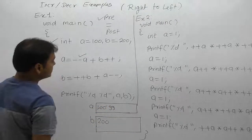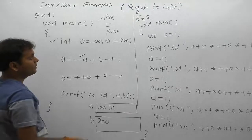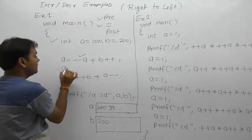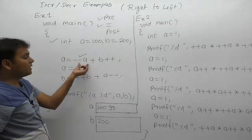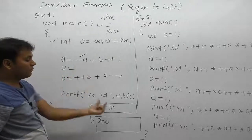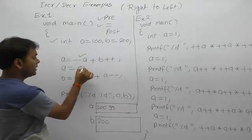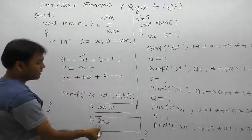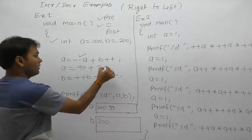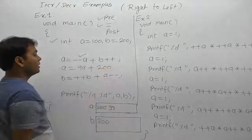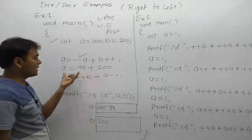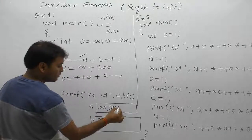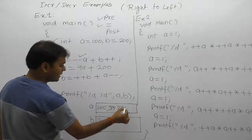Now a becomes 99. Next, assignment is performed. We replace with the value of b which is 200. So 200 plus 99 gives the result 299. Now the value of a becomes 299.